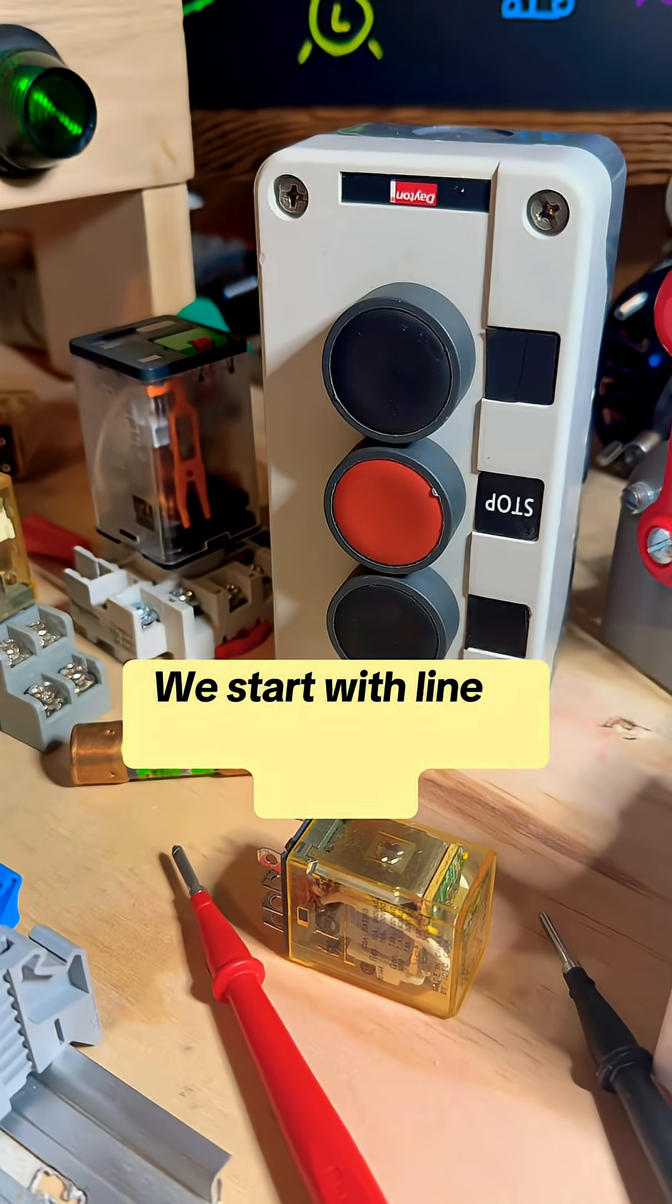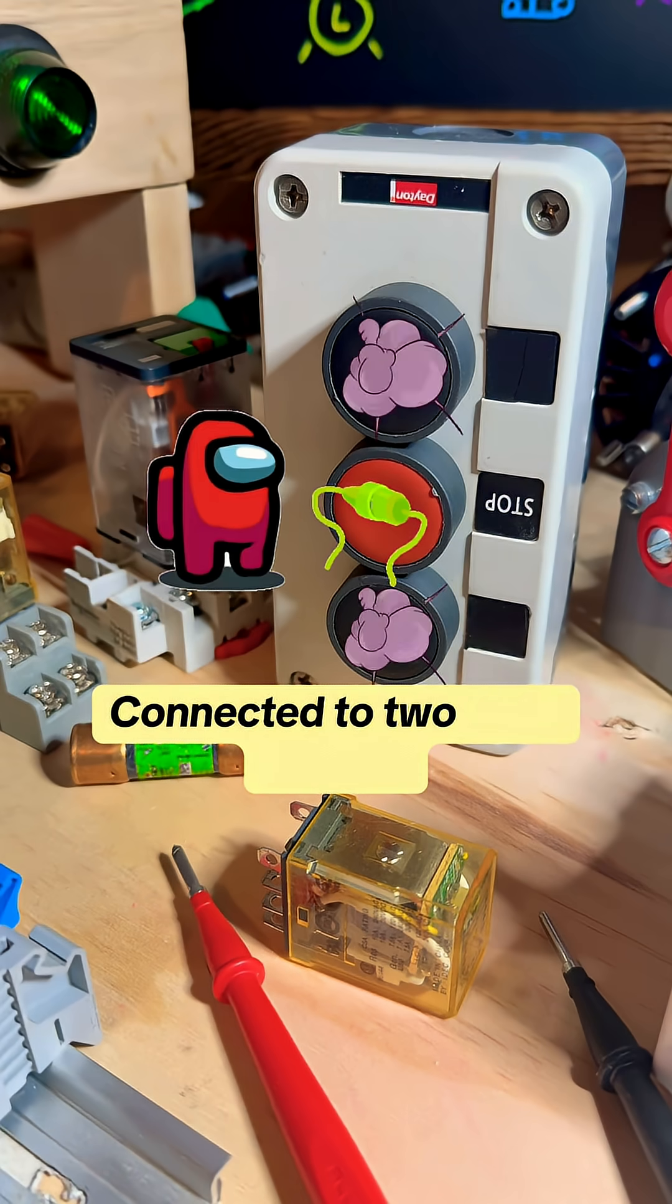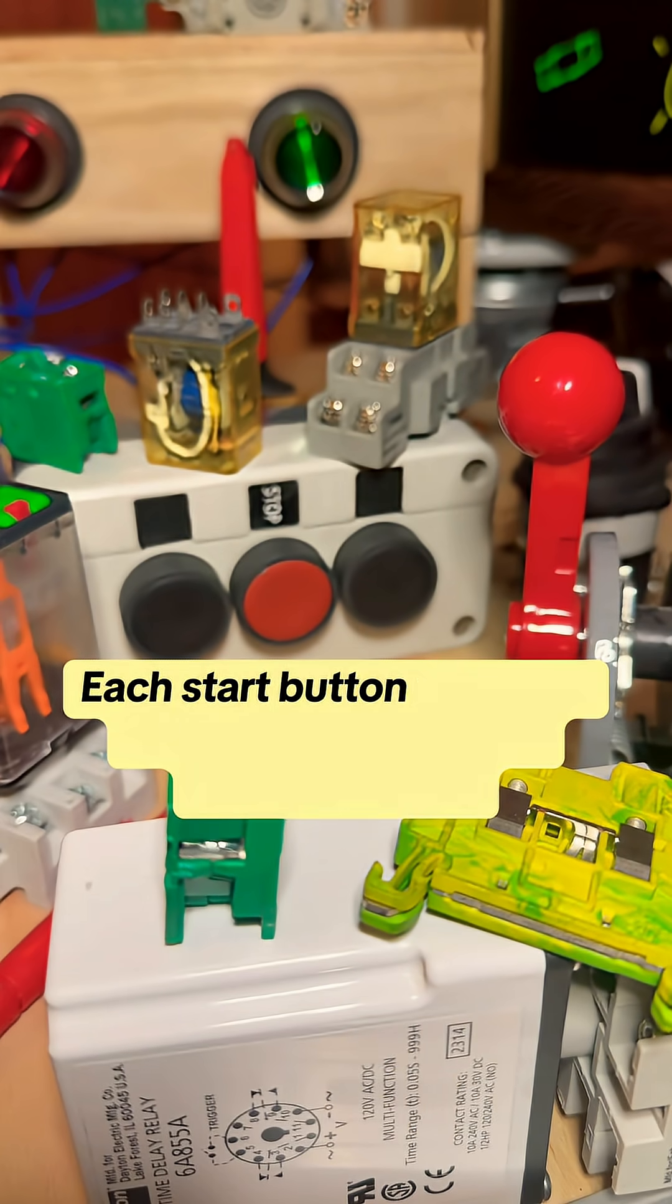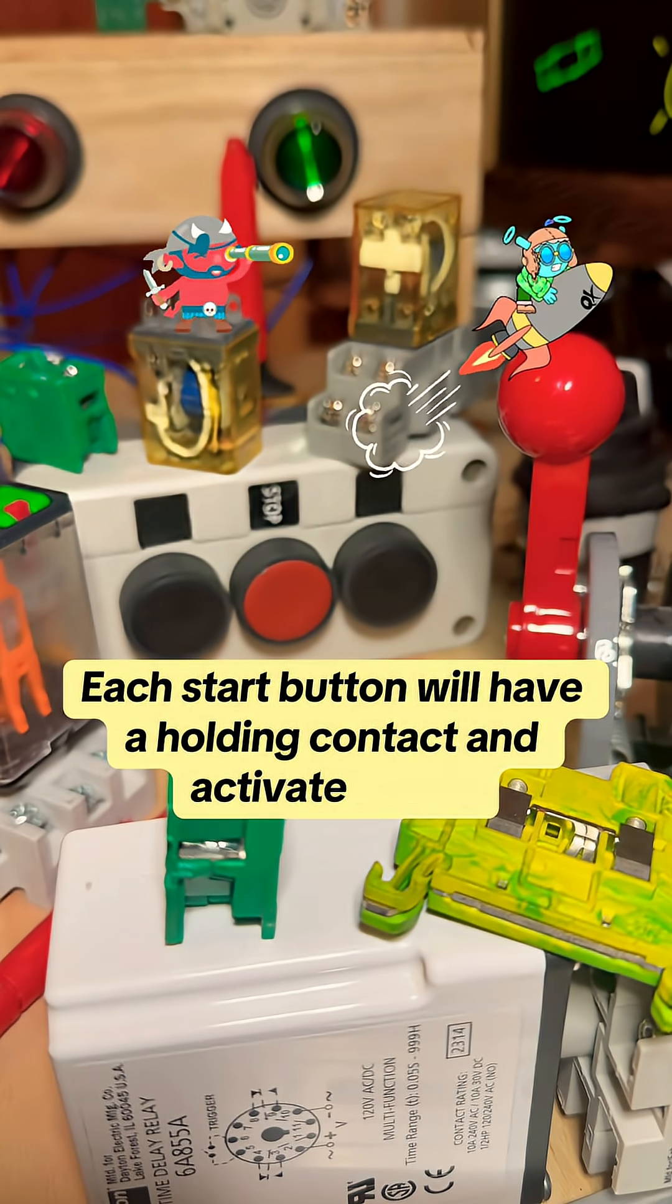We start with line one connected to a stop button connected to two start buttons. Each start button will have a holding contact and activate a relay.